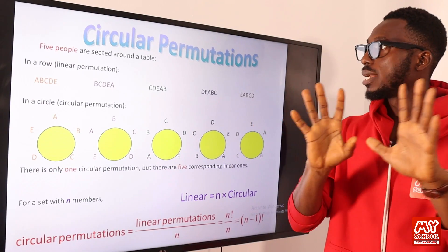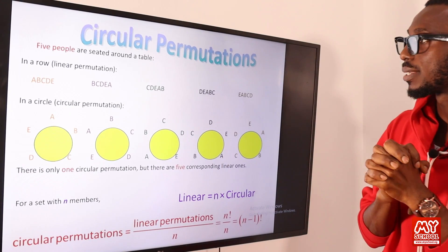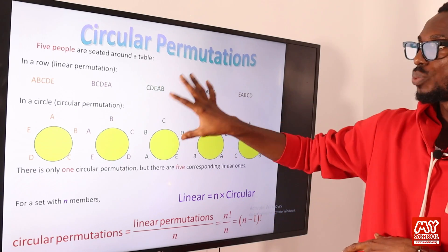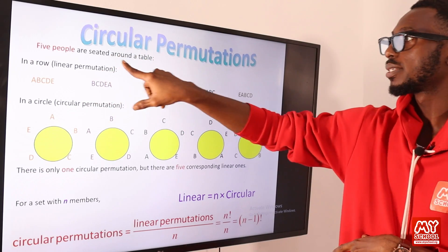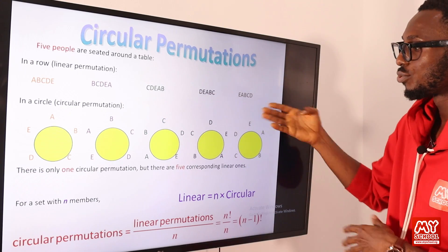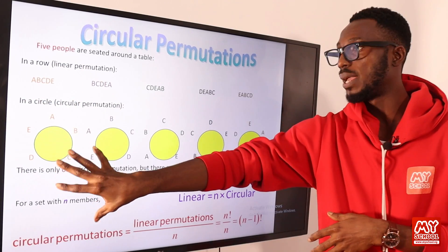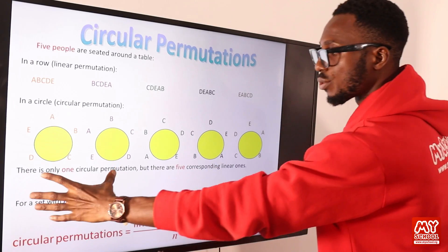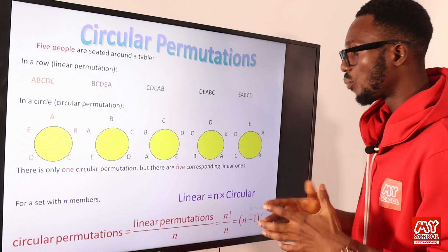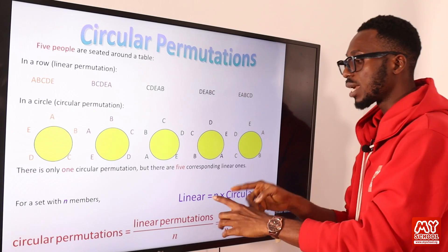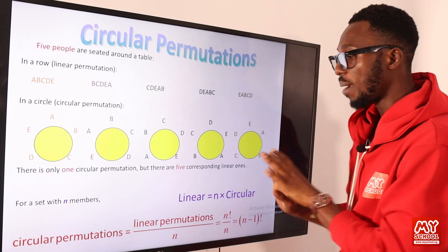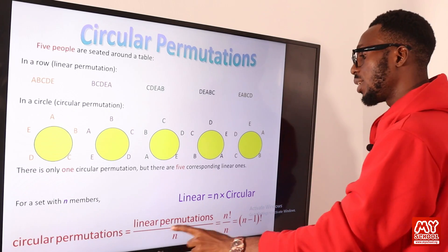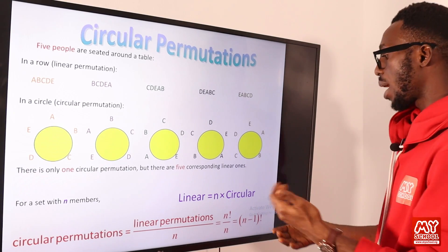We have a comparison between circular permutation and linear permutation. For example, five people seated around a table: that is (5−1)! = 4! arrangements — this is circular permutation. There is only one circular permutation, but there are five corresponding linear ones. So for a set with N members, the linear permutation equals N times the circular permutation, and the circular permutation can be expressed as the linear permutation divided by N, which still amounts to (N−1)!.